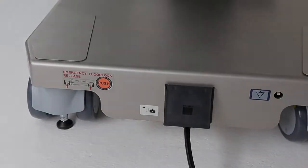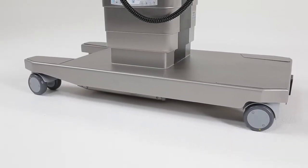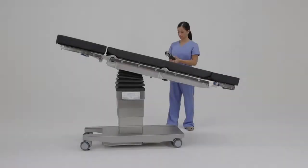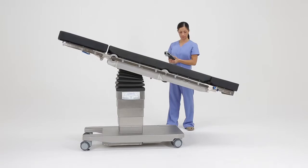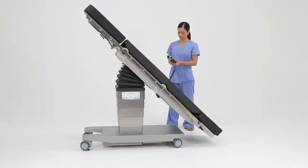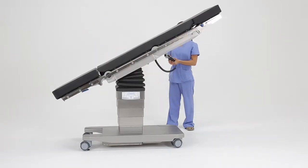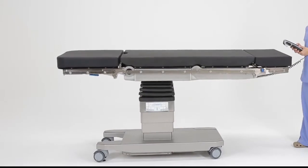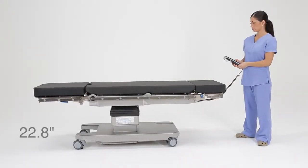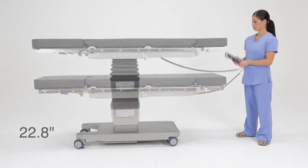Rising out of the strong foundation of the TS7000 base is the column, the muscle and brains of the table. With the TruSystem 7000, Trumpf continues our tradition of using electromechanical motors, not complicated hydraulic systems. This gives us exceptional reliability, but also enables many intelligent features. For example, the column has an exceptional range with its lowest height at 22.8 inches and highest position at 45 inches.